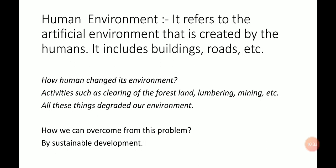The next topic of this chapter is human environment. Human environment means the artificial environment that is created by humans. Examples include buildings, roads, and many more things constructed by humans. How does the human change its environment? Activities such as clearing of forest land, lumbering, mining, etc. — these things degrade our environment. Whatever activities are done by humans have changed our environment; we have degraded our environment.